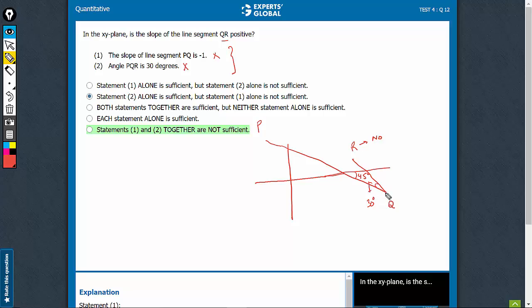However, this angle 30 degrees could have been in the other direction also. It could have been 30 degrees on this side as well, something like this.